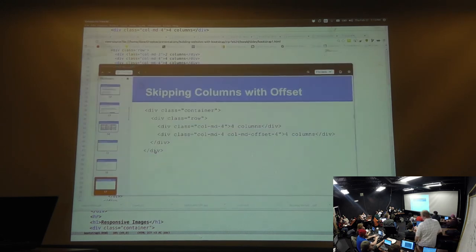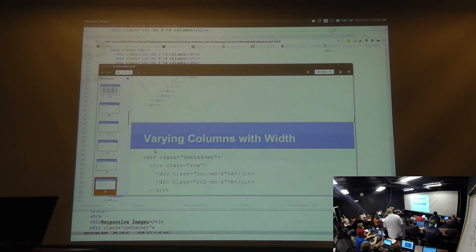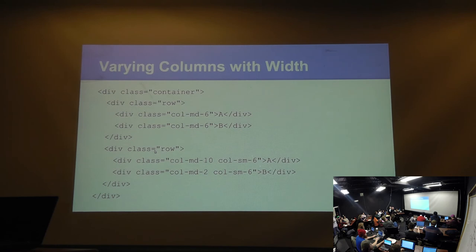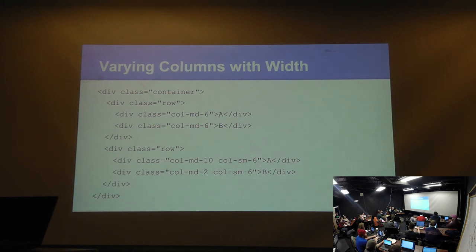You can define different column behavior based on the size of the viewport. This is where all the MD, XS, SM, LG classes come in. You get to say: this column in an MD viewport is 10 wide, otherwise it's 6. For example, a column that is col-md-10 and col-sm-6, paired with another that is col-md-2 and col-sm-6. As you resize, one kitten will get much bigger than the other kitten — that's the power of defining different column widths per viewport.